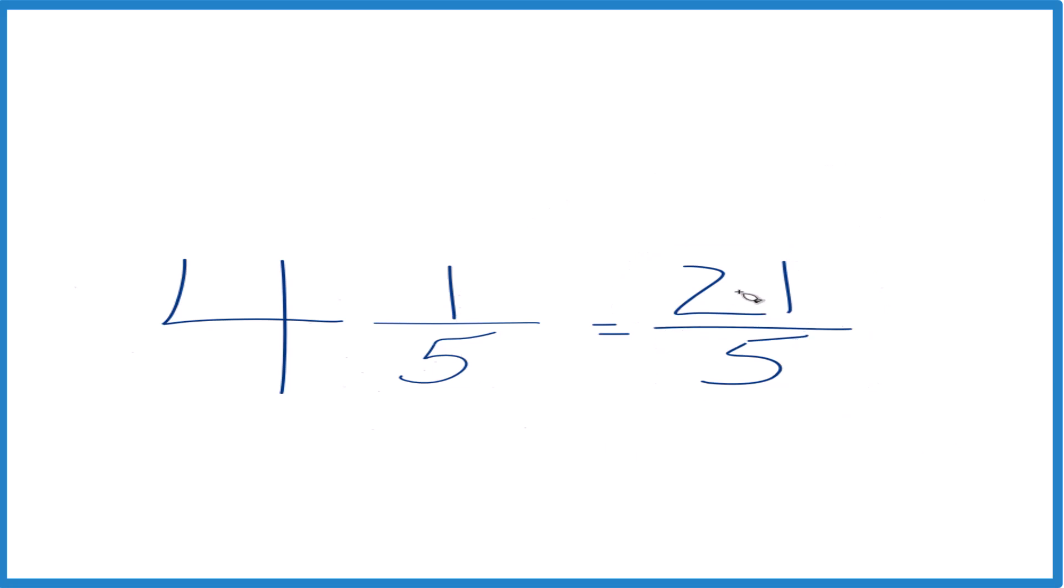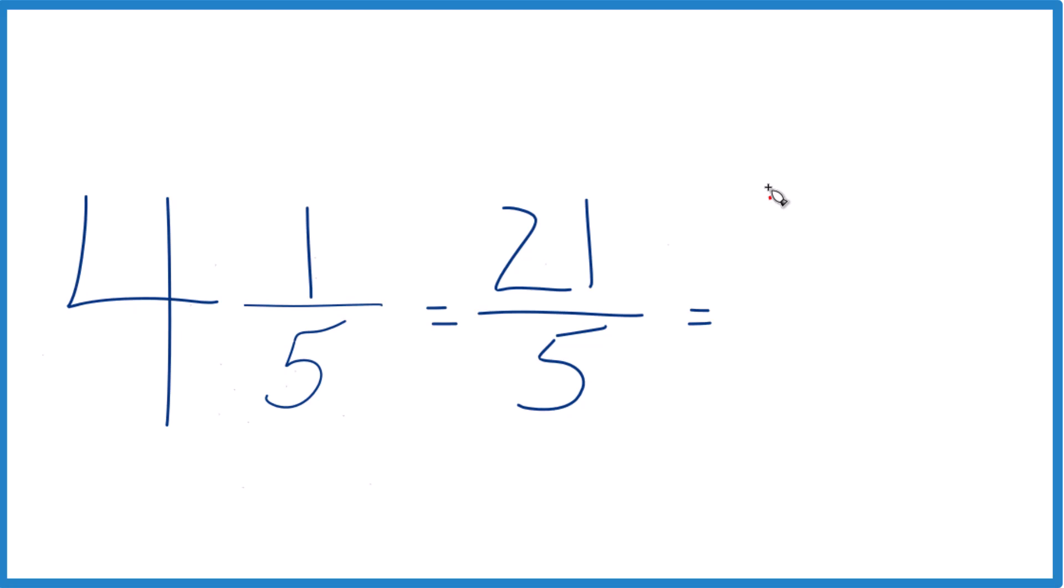We can even check our work here, because 5 goes into 20. Let's see, 4 times 5, that's 20, and then we just have 1 left over. Put it there, bring the 5 across, and 4 and 1 fifths. That's the same mixed number we started out with, so we know we did this correctly.